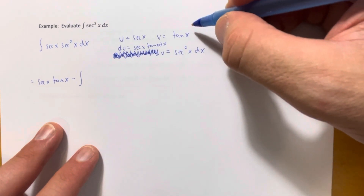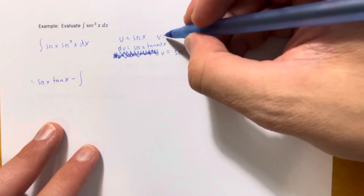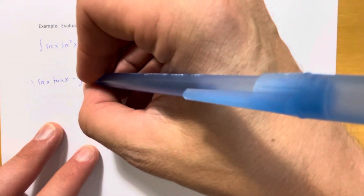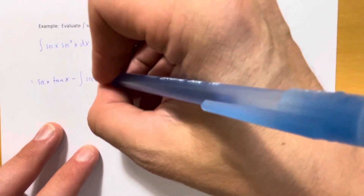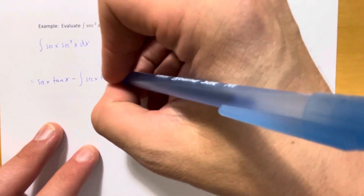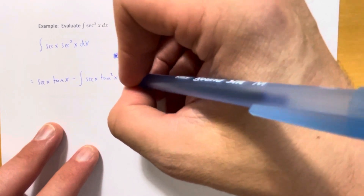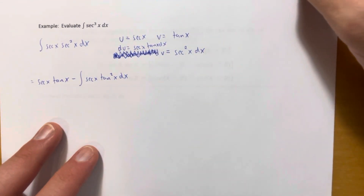For v du, we have a tangent from v and a tangent from du, so they multiply to give us the integral of secant of x times tangent squared of x dx.